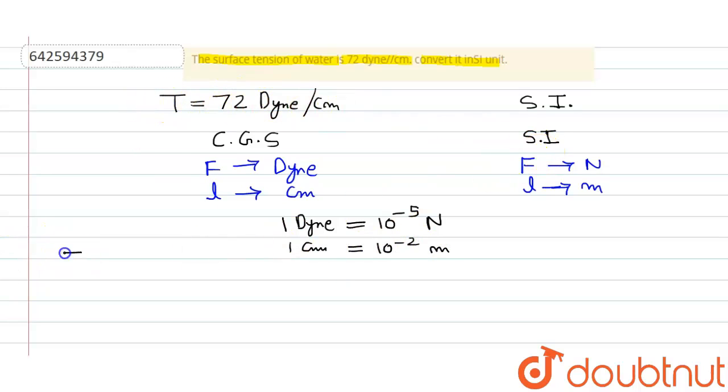So let's write it. Given T is equal to 72 dyne per centimeter. So we will multiply 72 by 10 raise to minus 5 because one dyne is equal to 10 raise to minus 5 newton, divided by what is centimeter. One centimeter is equal to 10 raise to minus 2 meters, so we will divide it by 10 raise to minus 2. So we will get our final answer.